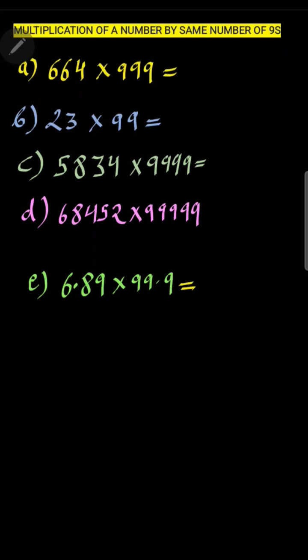If you ask me what is the multiplication of these, so very quickly I am able to tell you the answer of problem A is 663336, and for B it is 2277.